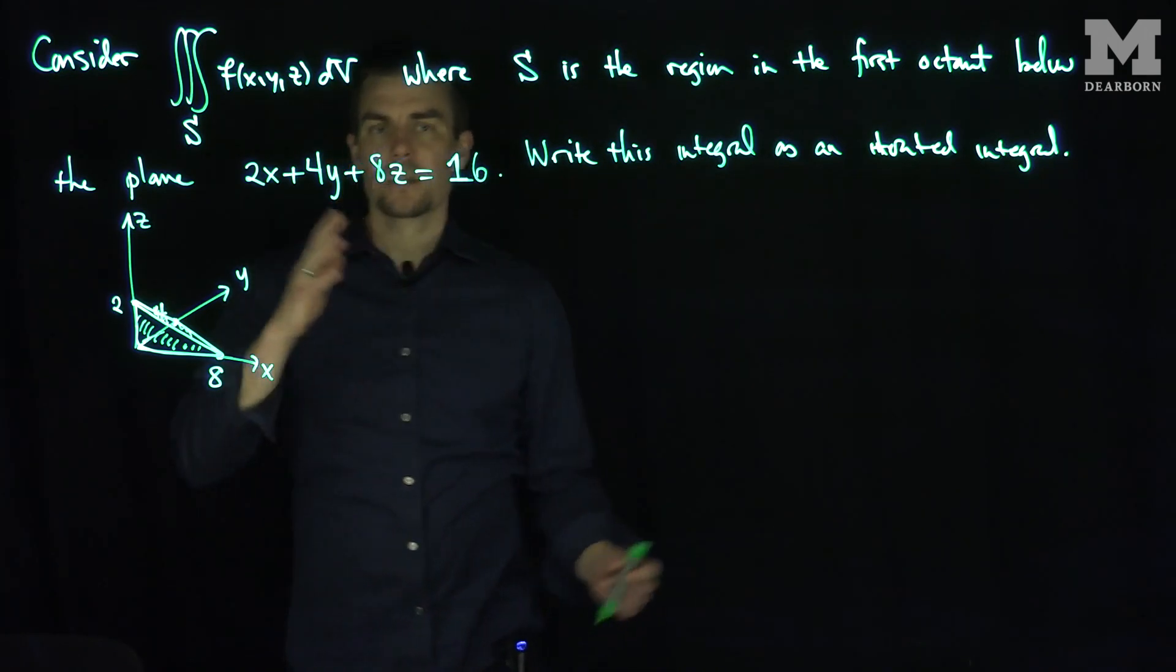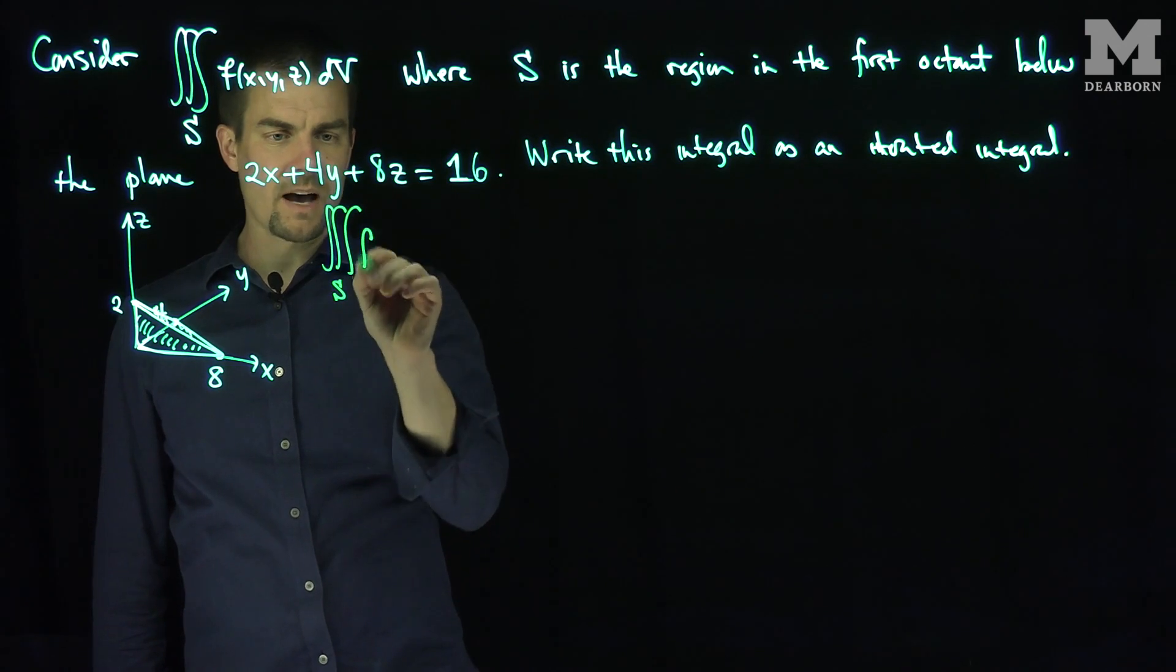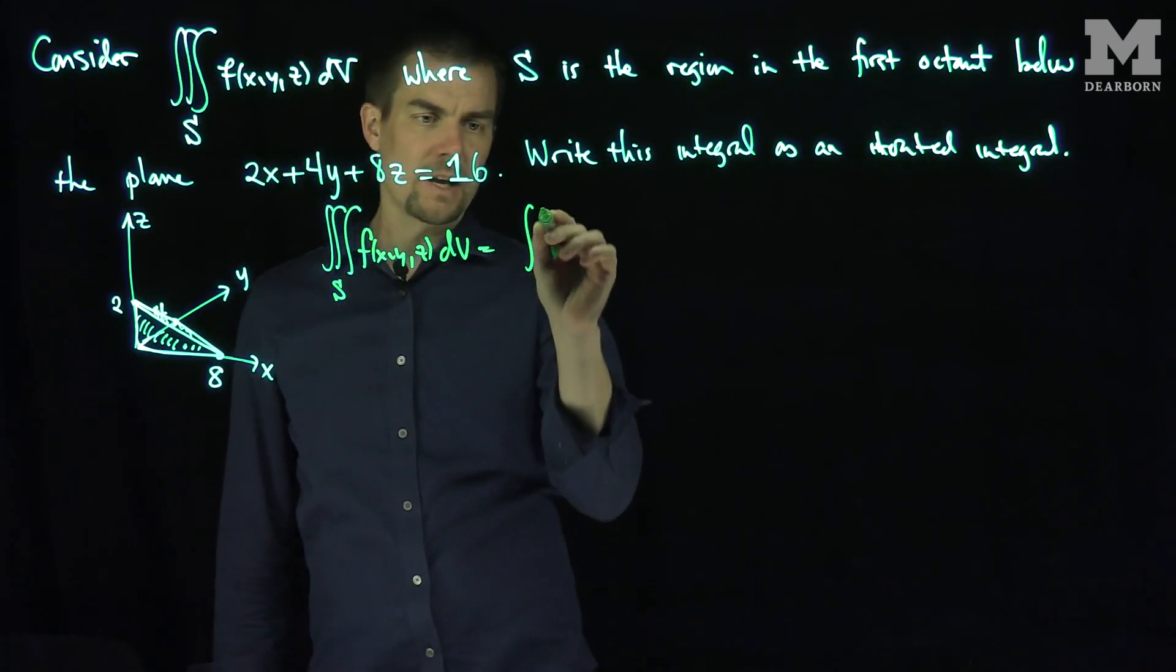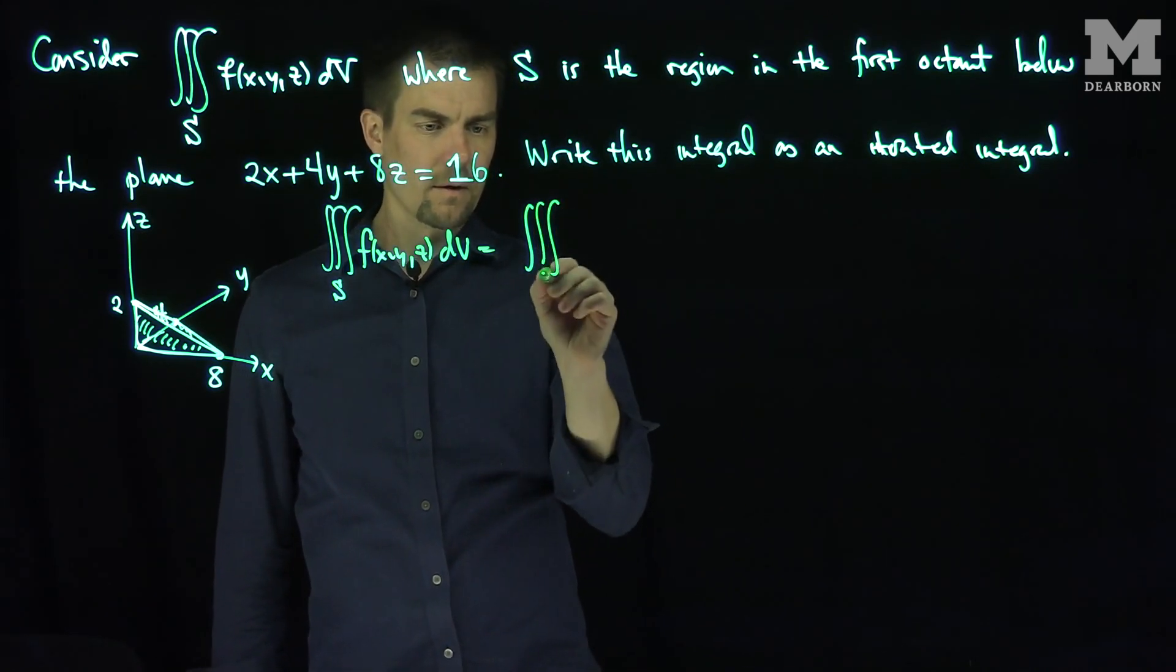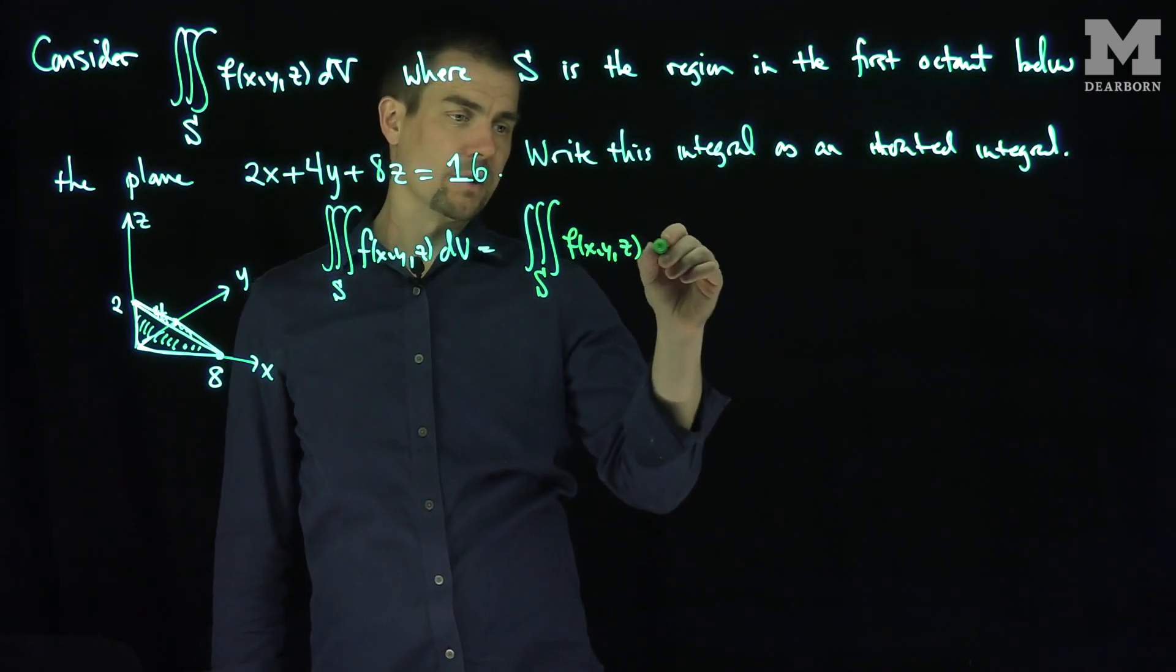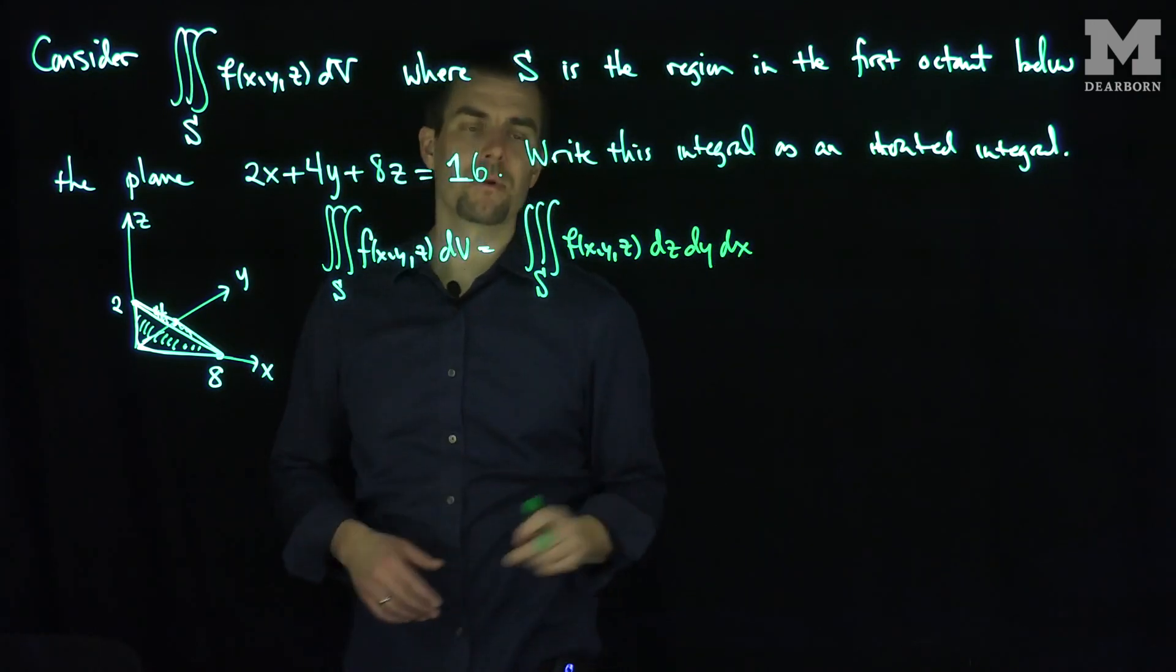And so what I want to do is, let's try to write this integral in the following way. Let's try to write the triple integral over s of f of x, y, z dv as the integral, the triple integral over s of f of x, y, z with respect to one particular order of integration. Let's do a dz, dy, dx as one example.